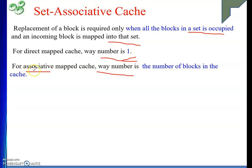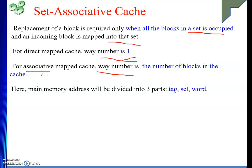For set associative, the main memory address will be divided into three parts: one is tag — whether the block is there — set field indicating into which particular set the block will go, and the word field to find out the data item inside the block. So there are three fields in the main memory address. Whereas in associative mapping, only tag and word were there.